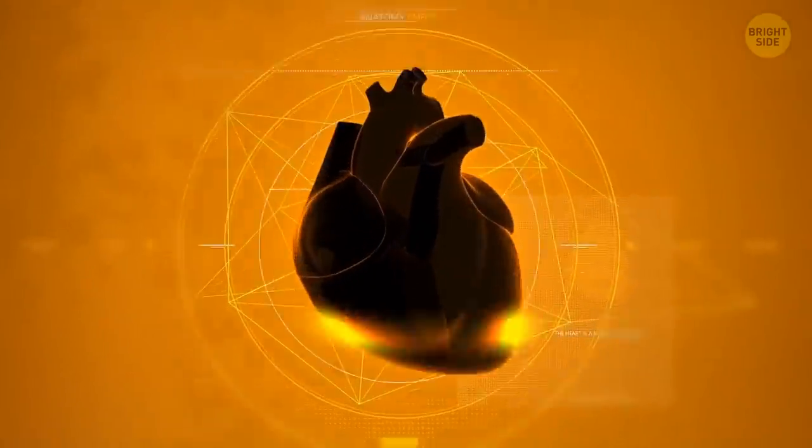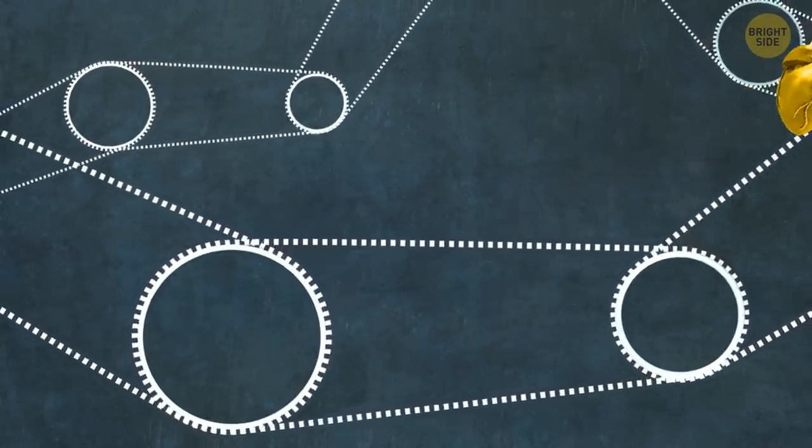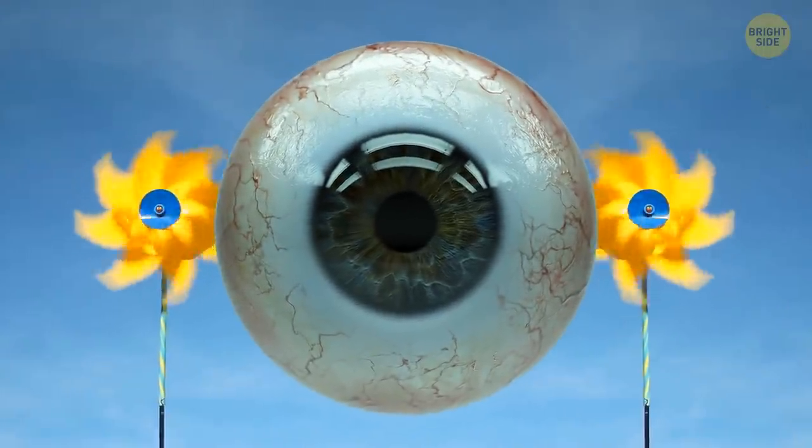The beating sound your heart makes is the clap of valve leaflets opening and closing. Your heart doesn't replicate its cells unless you have an injury. Your corneas are the only part of your body that don't get blood. They get oxygen directly through the air.